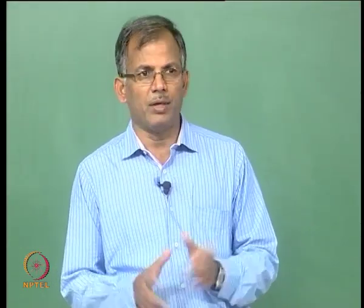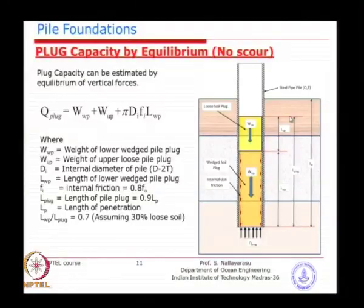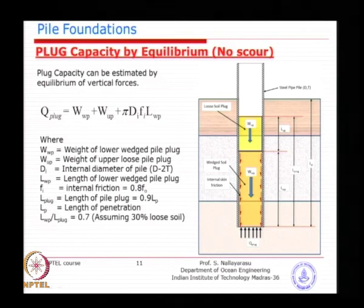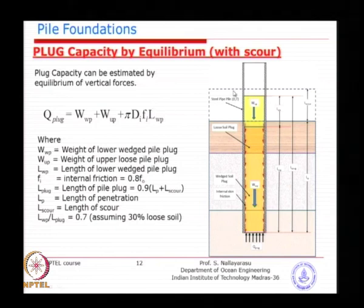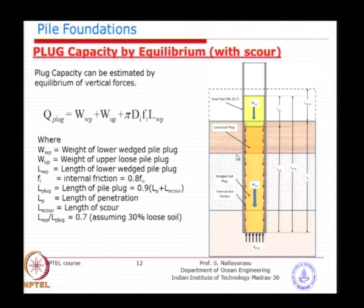Scour is nothing but the removal of soil in the vicinity of structures or the pile constructed on the sea floor. Because of the obstruction, the increased flow circulation will remove particles away, forming a small crater — called scour. It is very serious when you have granular material, as it gets removed very easily. When scour occurs, the original soil floor has been removed. However, the inner soil within the plug has not been removed because it is contained within the pile. The calculation method is essentially the same.